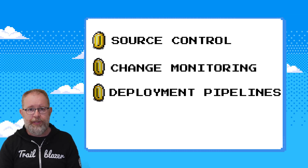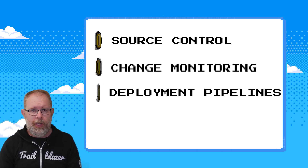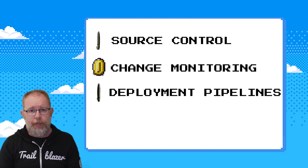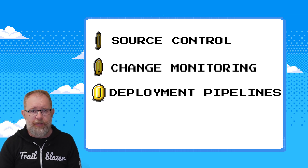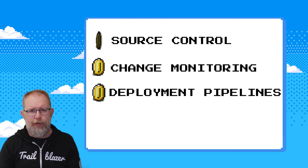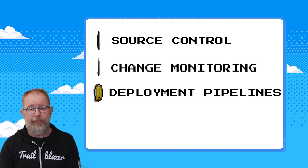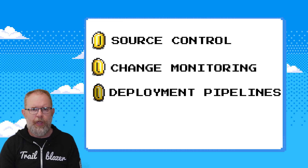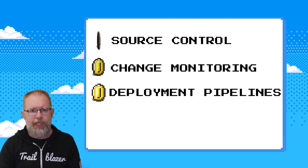Number three is establishing robust deployment pipelines. These will help you enforce structure. Use continuous integration to ensure that changes are tested before being promoted down through those environments, and use continuous delivery to automate the movement of those changes between the environments. When everything's automated and reviewed, there's less chance of those environments falling out of sync.